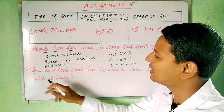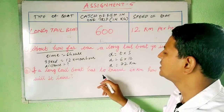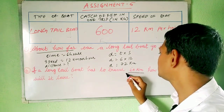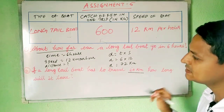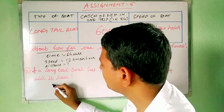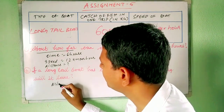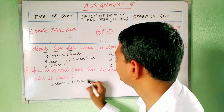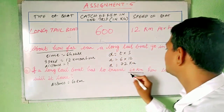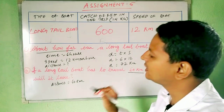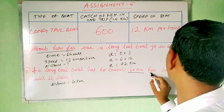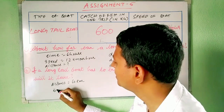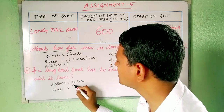In the second part, if a long tail boat has to travel 60 kilometers — distance is measured in kilometers — so distance is given as 60 kilometers. How long will it take? 'How long' means they are asking us about the time.